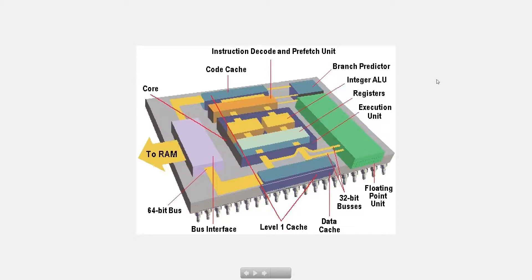Hey guys, welcome back. On this video we're going to go over a little bit about registers. Here I have a picture of a modern Pentium processor, and I wanted to show you how the registers are built into the microprocessor. They're really close to the ALU, which is the arithmetic and logic unit, and they go pretty much hand in hand — that's why you see them so close to each other. A register is essentially a memory location.